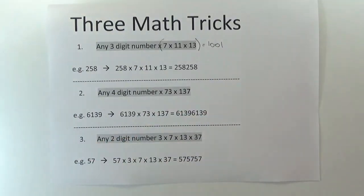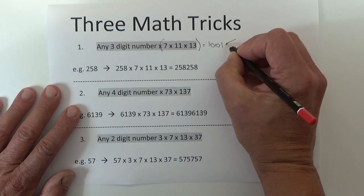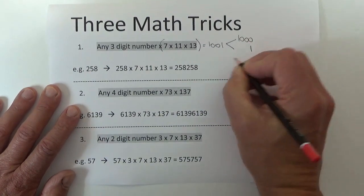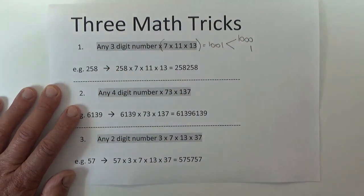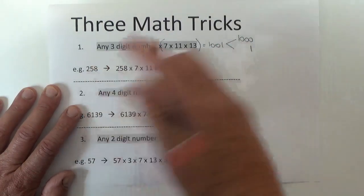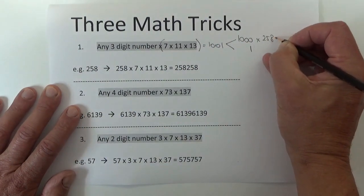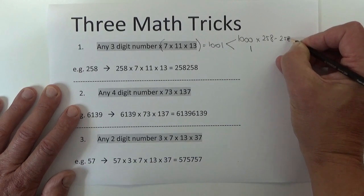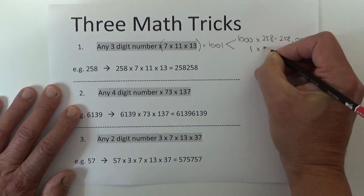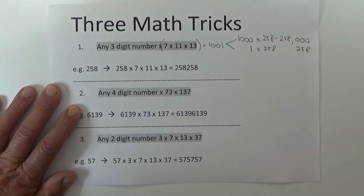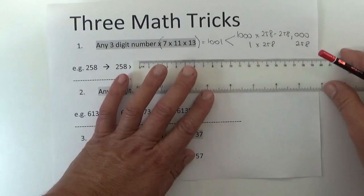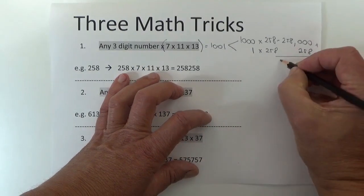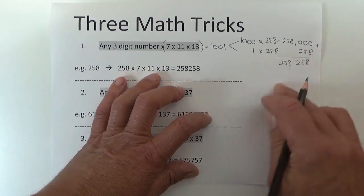Yes, 1001. And multiplying by 1001 is the same as multiplying by 1000 and also multiplying by 1, and then adding those two answers together. So if you multiply 258 by 1000, that's going to be 258,000, and then 1 times 258 is just 258. Add those two numbers together and the answer is 258258, as we've worked out.